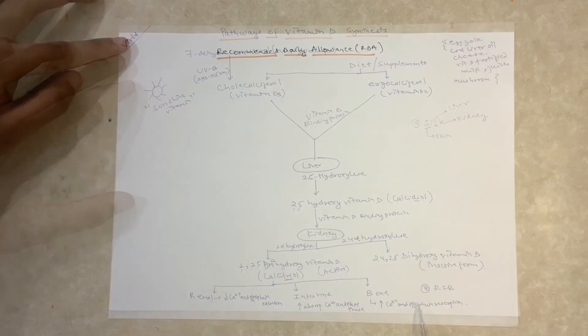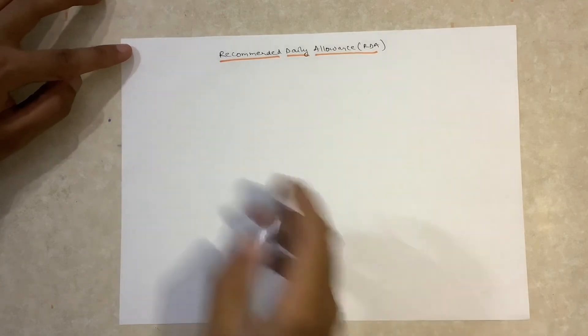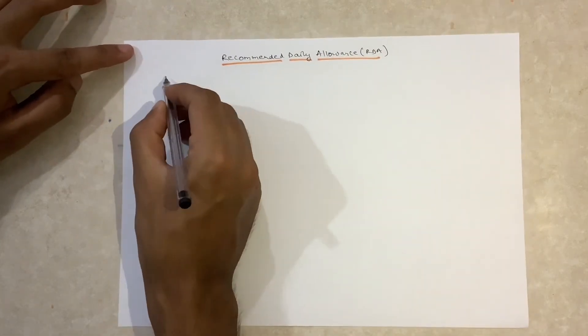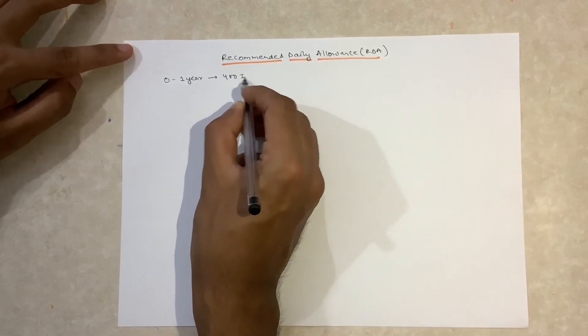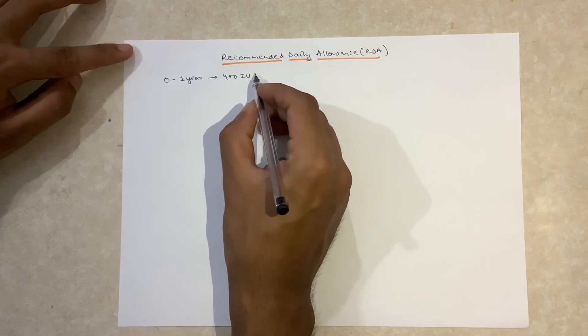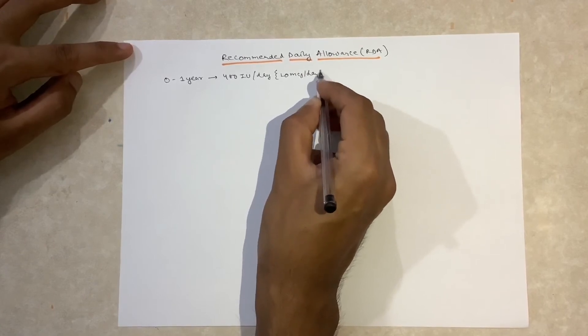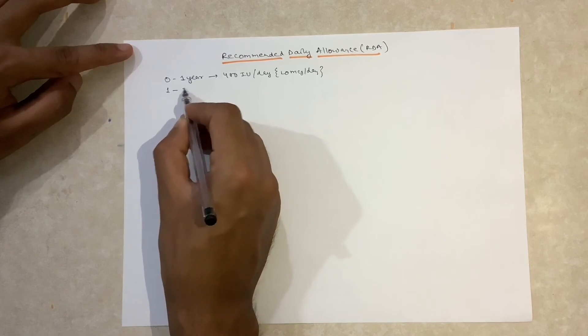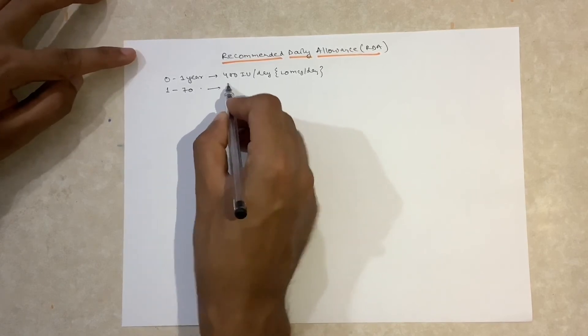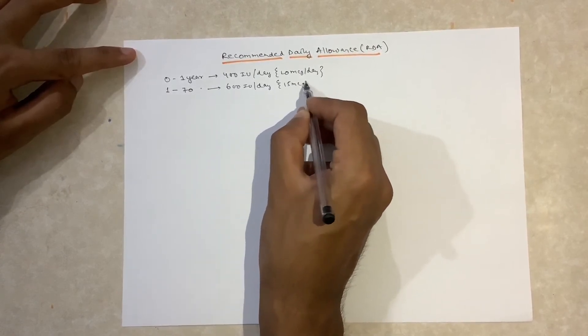Now let's talk about the recommended daily allowance, that is RDA, for vitamin D. For a child of age 0 to 1 year, the recommended daily allowance is 400 international units per day, which is equivalent to 10 micrograms per day. From 1 year up to 70 years, it is 600 international units per day, which is equivalent to 15 micrograms per day.